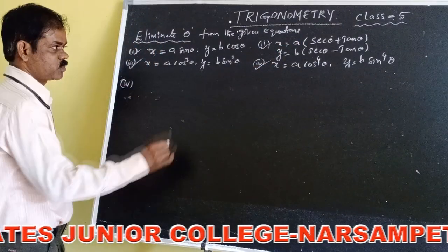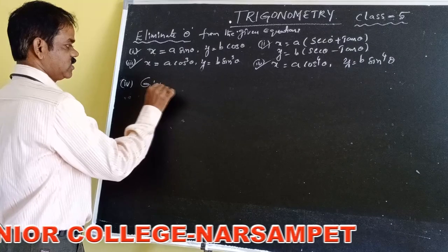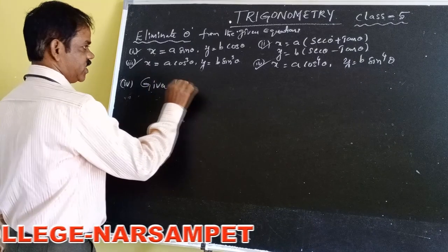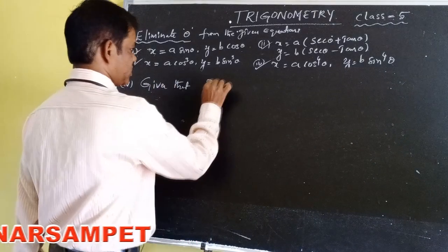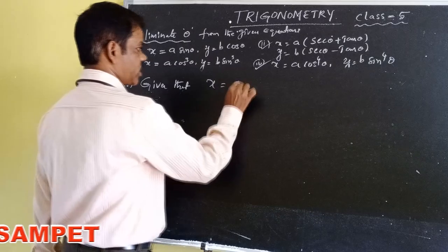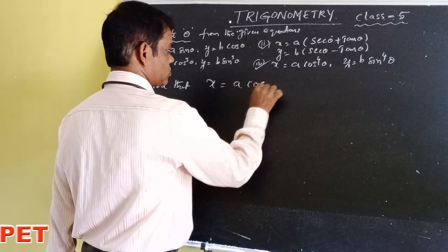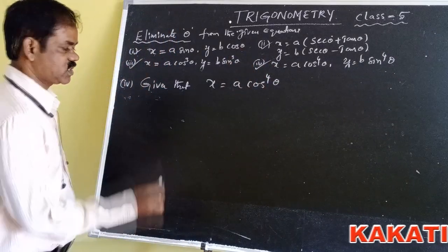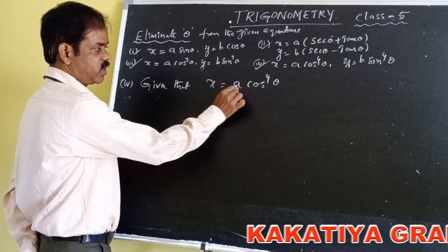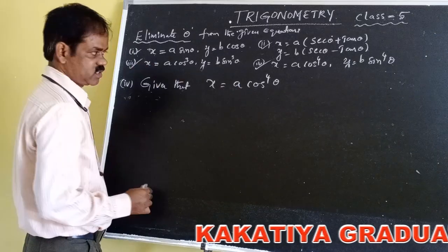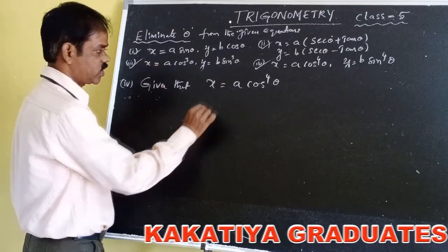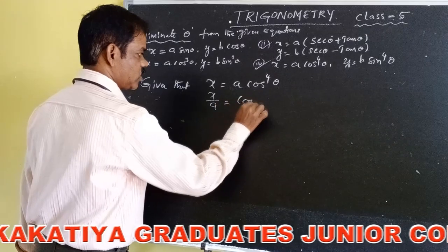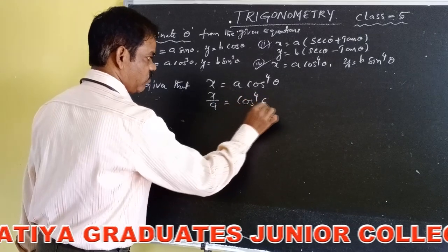Fourth problem: Given that x = a·cos⁴θ. Taking a to the other side, x/a = cos⁴θ. In the RHS, we have cos⁴θ. We need to shift this into cos²θ. If you multiply the power by 1/2, you can shift cos⁴θ to cos²θ.